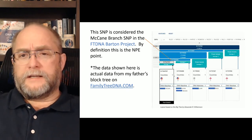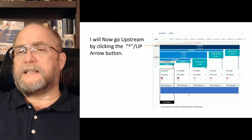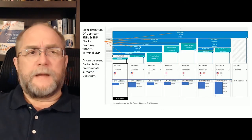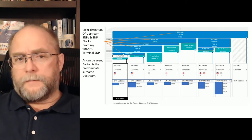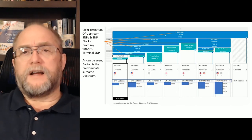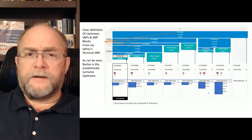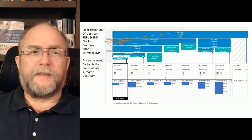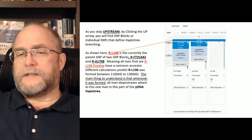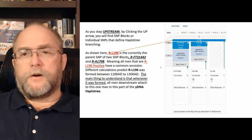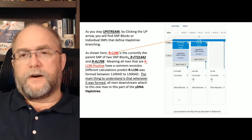If we continue upstream and click this button, it shows how we fit further up into the haplogroup tree. Stepping up, this is where we started with my father's branching, and you notice there's a bunch of either SNPs or SNP blocks defined upward in this section. A prominent name here, after we get out of this one section, is Barton. Going upstream another click, it becomes an individual SNP well upstream. When you look at L196, it has two block SNPs underneath of it — one that defines my father's line and then another line.